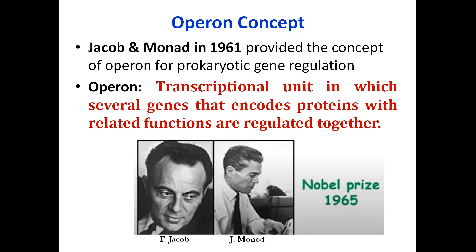For gene regulation in prokaryotes, the operon concept was given by Jacob and Monod in 1961. They published a study showing how lactose utilization is regulated in E. coli. For that, they gave the operon concept and won the Nobel Prize. Basically, an operon is a transcriptional unit — from DNA to mRNA — where several genes, more than one, are encoded together, and those genes code for proteins of related function.